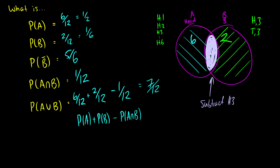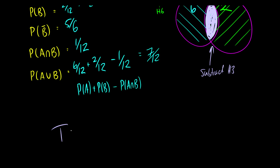So that's basic probability. Questions can be more difficult, but the main focus of the course is axiomatic probability, which I'll cover next time, and conditional probability, which will take a couple of videos to explain. If you have any questions, leave them in the comments. You can check out trevtutor.com for exams, videos, and other courses. Thanks for watching — hopefully I'll see you for axiomatic probability next time.